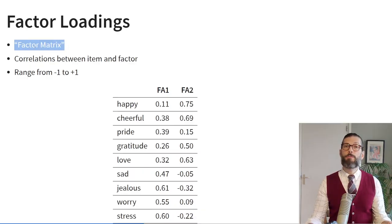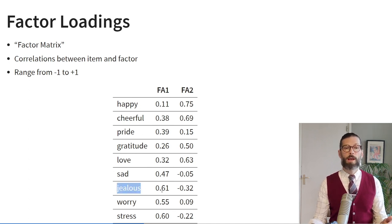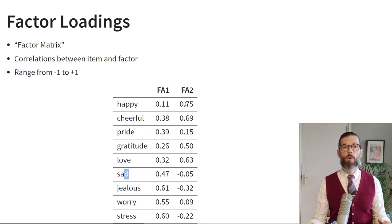When we perform exploratory factor analysis, we get something very similar to the component matrix from PCA: a matrix of factor loadings, sometimes called the factor matrix. This shows the correlations between items and factors. If we extracted two factors from our 12 items, we would see, for example, that the item 'happy' correlates 0.11 with the first factor (pretty low), but 'jealous' correlates 0.61 with the first factor (pretty high). Looking at the big picture, negative emotions — sad, jealous, worry, stress — all load higher on the first factor than positive emotions like happy, cheerful, gratitude, and love. For the second factor we see pretty high correlations for the positive emotions but low or even negative correlations for some negative emotions.